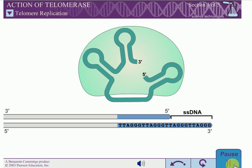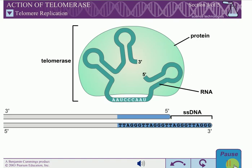Most eukaryotes use a specialized DNA polymerase called telomerase to solve the end replication problem. Telomerase is comprised of both protein and RNA. The RNA includes 1.5 copies of the complement of the telomeric sequence. For example, human telomerase RNA contains the sequence UAACCCUAA.